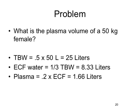The plasma volume is a subset of the extracellular fluid volume, so we must next calculate the extracellular fluid volume. The extracellular fluid volume is one-third the total body water, or in this case one-third of 25, which is 8 and a third. The plasma volume is 20 percent of the extracellular fluid volume, so in this case it's 20 percent of 8.33, which equals about one and two-thirds liters.